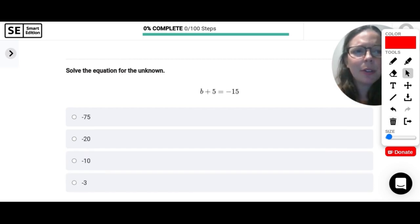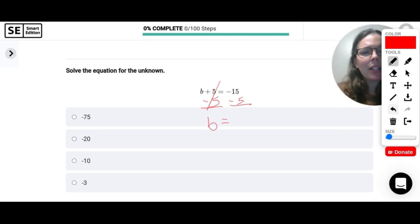Solve the equation for the unknown. B plus 5 equals negative 15. So I want to try to get B by itself. So I need to move this 5 over. I'm going to use the opposite operation to get it to cancel out. So I have to subtract 5 from both sides. So don't be confused by these negative signs in front. Negative 15 minus 5 is just going to get more negative. So this is still going to be negative. And then negative 15 minus 5 would get me to 20. So this will have to be negative 20.